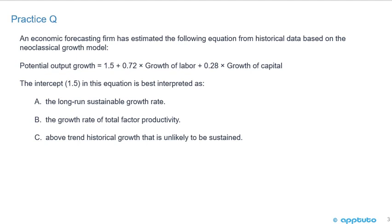A, the long-run sustainable growth rate. B, the growth rate of the total factor productivity. Or C, above trend historical growth that is unlikely to be sustained.